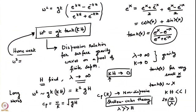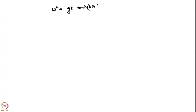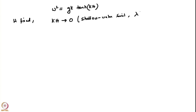This is the dispersion relation for surface gravity waves on a pool of finite depth: ω² = gk·tanh(kh). In the deep water limit (kh → ∞), tanh(kh) → 1 and we recover the known deep water behavior. We have looked at two limits: kh → 0 (shallow water), where waves become non-dispersive, and kh → ∞ (deep water).